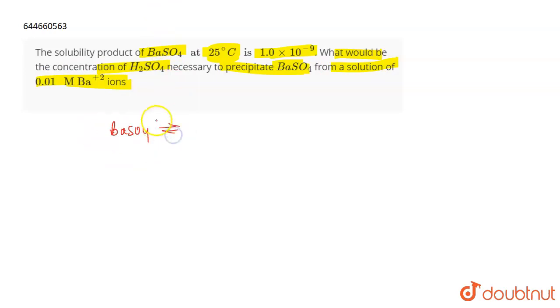BaSO4 is a sparingly soluble salt which dissociates to give Ba²⁺ and SO4²⁻. If we assume the solubility of BaSO4 to be S, and as BaSO4 gives 1 mole of Ba²⁺ and 1 mole of SO4²⁻, the solubilities for them are also going to be S and S.